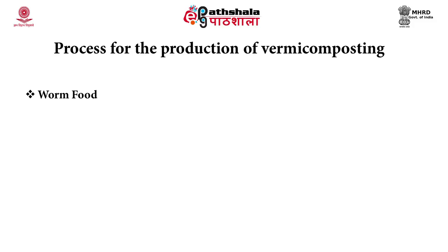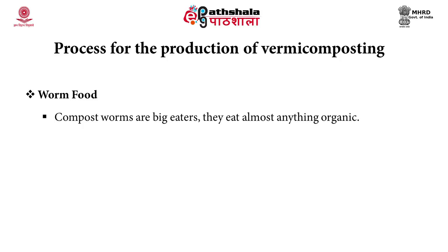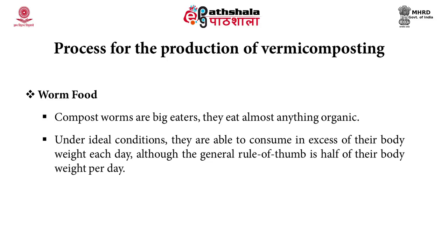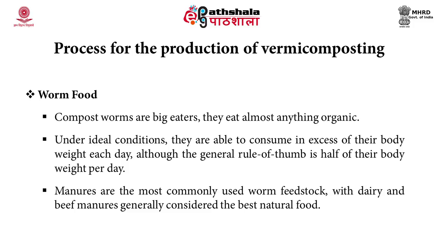Worm food or raw material as substrate for vermicomposting: vermicomposting earthworms are very big eaters. They eat almost everything which is organic in nature. Under ideal conditions, they are able to consume in excess of their body weight each day, although the general rule of thumb is half of their body weight per day. The body weight of each earthworm is about 1 gram, so they can consume about half a gram per day. Manures are the most commonly used worm feedstock, with dairy and beef manures generally considered the best natural foods for earthworms.